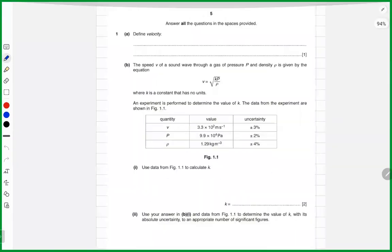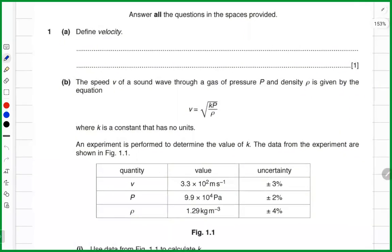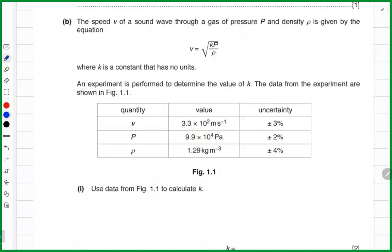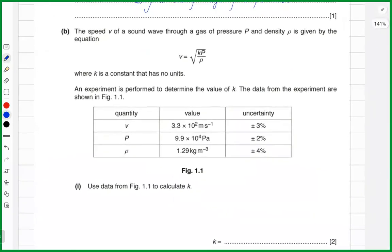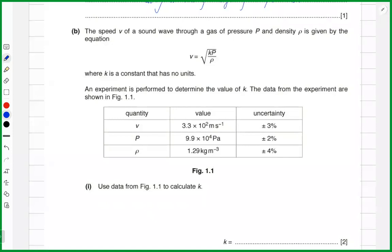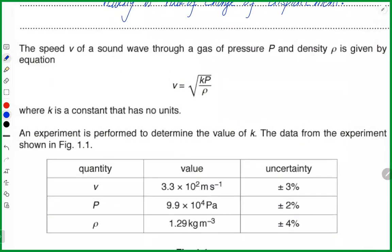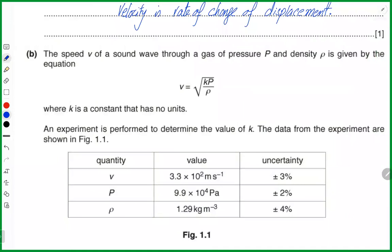So, define velocity. Velocity is the rate of change of displacement. Now, v equals speed, which equals √(kp/ρ). Because this is not an equation you already know, the examiner is bound to explain every single variable: speed v, pressure p, density ρ. Where k is a constant that has no unit.